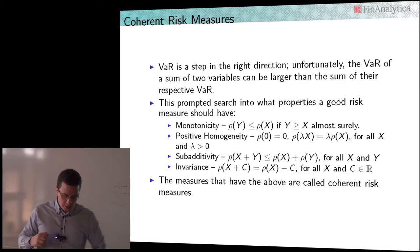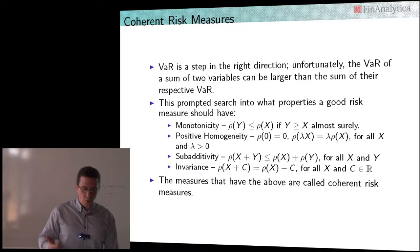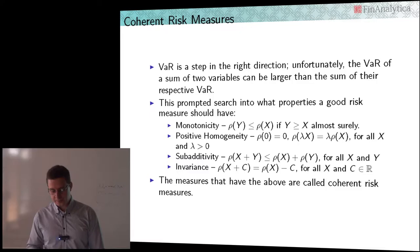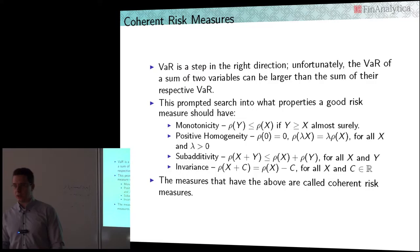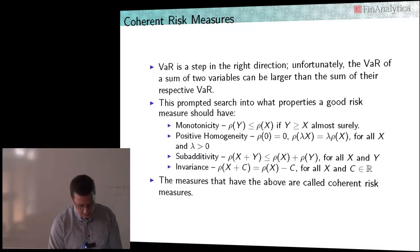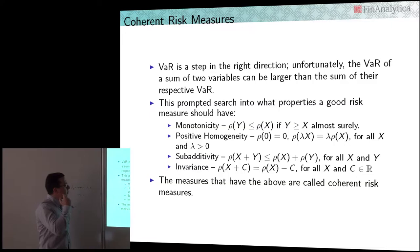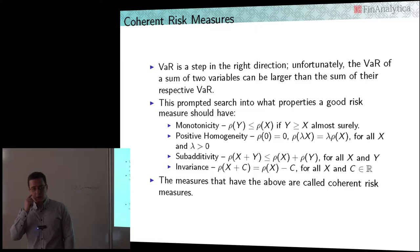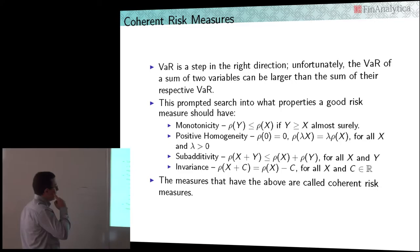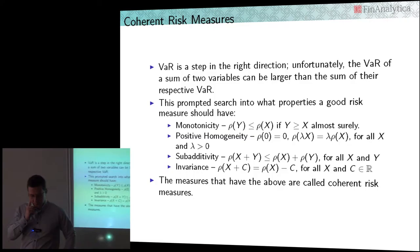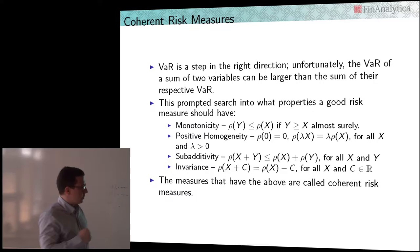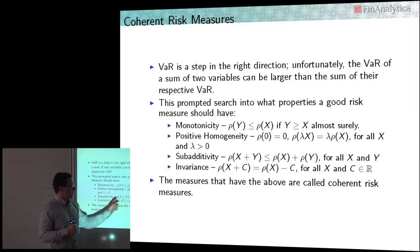VAR is a downside risk measure that looks at losses, but unfortunately there are cases where the sum of two variables can have a larger VAR than the sum of the respective variables. So we don't have sub-additivity for VAR — we don't get the diversification effect. This is quite unreasonable, and research led people to define four main properties that a good risk measure should have. All risk measures having these properties are called coherent risk measures — those are the good ones.